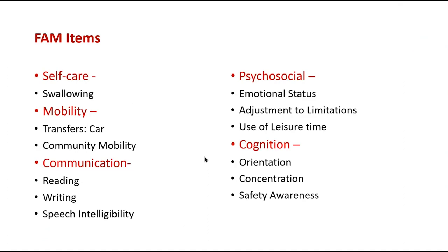These are the FAM items. Under self-care we have swallowing — although we look at swallowing in the FIRM item, we go into it in a different way in the FAM, as explained in the manual. A very important item for people in the community is looking at their ability to do car transfers and community mobility. Under communication, we look at their ability to read and write and speech intelligibility — can we understand what people are saying.